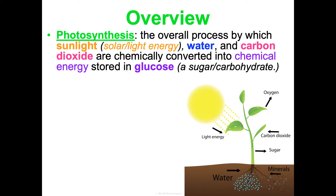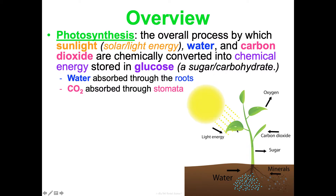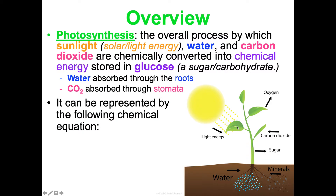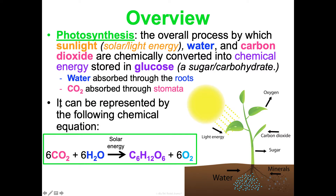Photosynthesis is the overall process by which sunlight — solar energy or light energy — water, and carbon dioxide are chemically converted into chemical energy stored in the form of glucose, which is a sugar or carbohydrate. Water gets absorbed through the roots of the plant. CO2 comes through pores in the plant's leaves called stomata. This whole process is represented by the chemical equation: 6CO2 + 6H2O with solar energy → C6H12O6 (glucose) + 6O2.